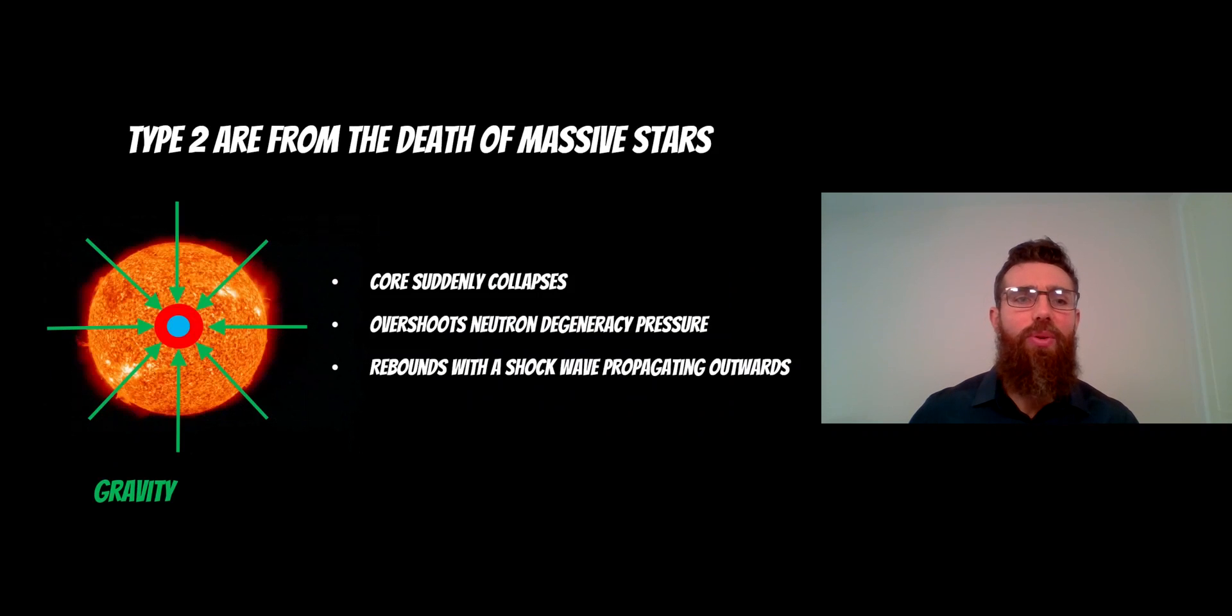The type 2 are from the death of massive stars, and because of that, the mechanism is different to what causes the supernova. Here you've got that central core which is generating energy, so you've got an outward pressure which is supporting it against gravity. Once that hydrogen fusion, or the fusion in the core—because if it's a massive star it'll be fusing different things—once that ceases, the gravitational force then collapses it.